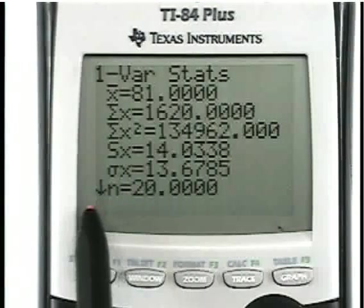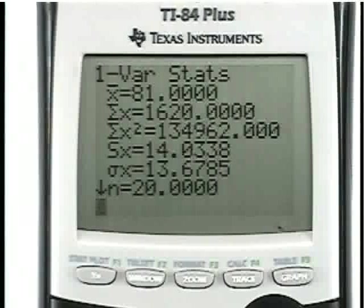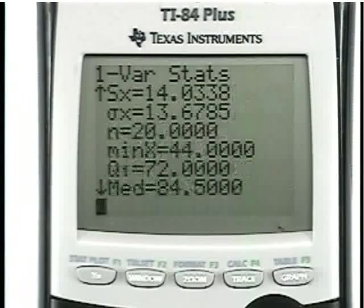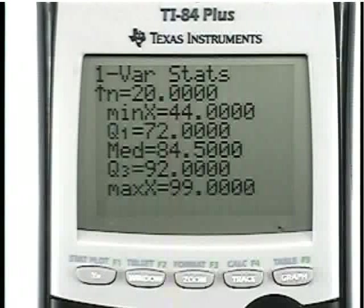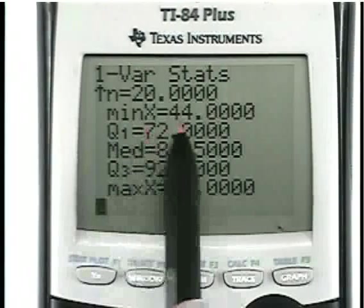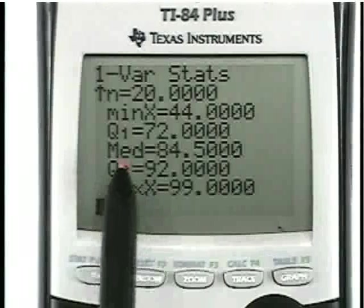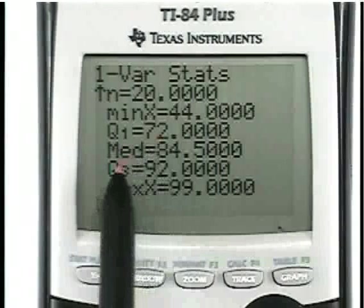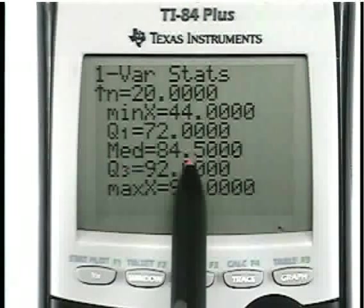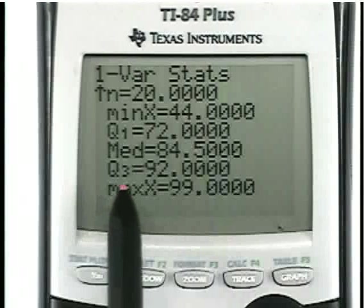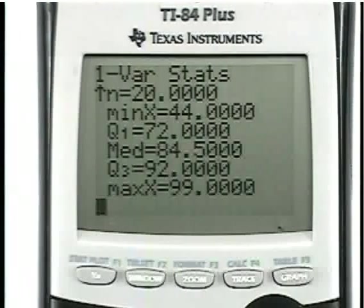Notice this down arrow right here says there's more. So if I press the down arrow key on my keypad, I'm going to go all the way to the bottom. Notice here it says min X, that's the minimum of X which is 44. That's the smallest of the data values. And there's the median 84.5, Q3 92, maximum is 99. That's it for the quartiles.